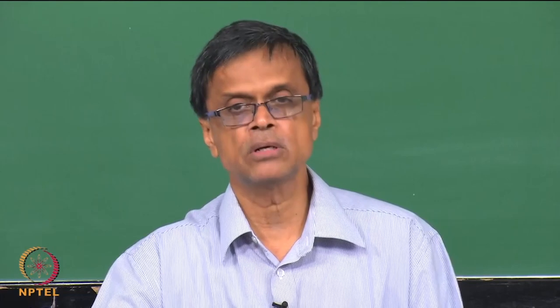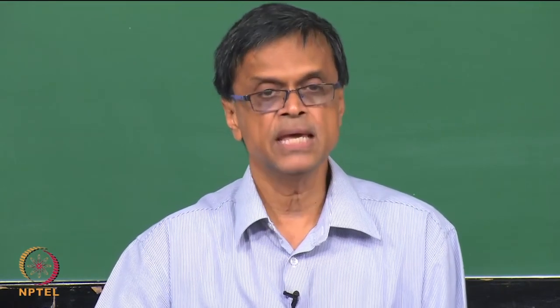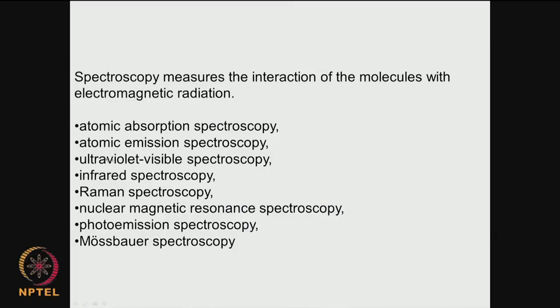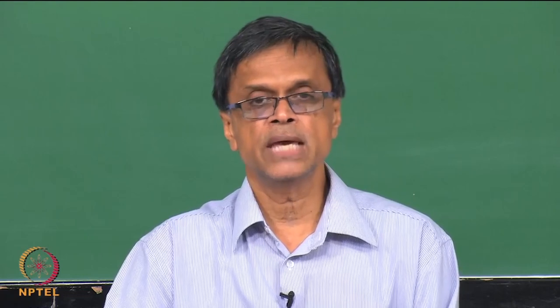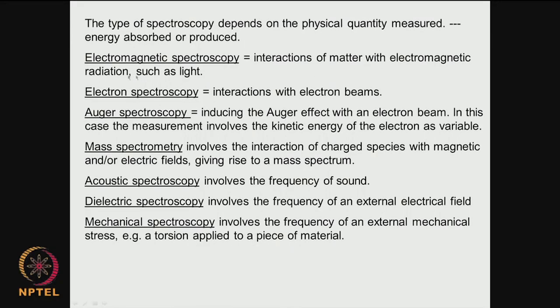EDX — energy dispersive X-ray — can also determine elements but mostly looks at only the surface, whereas atomic absorption spectroscopy can be used for bulk analysis to find various elements present in the material. Infrared spectroscopy (IR or FTIR — Fourier transform infrared) is a very powerful and useful tool in the biomaterial area. In electromagnetic spectroscopy there is interaction of matter with electromagnetic radiation; electron spectroscopy involves interaction with electron beams; Auger spectroscopy induces the Auger effect with an electron beam and measures kinetic energy of electrons.